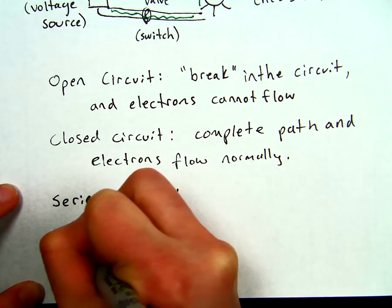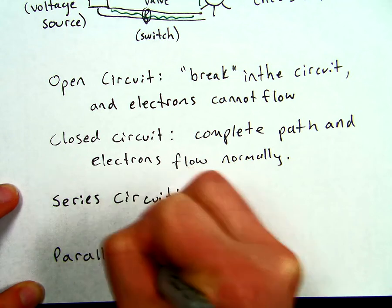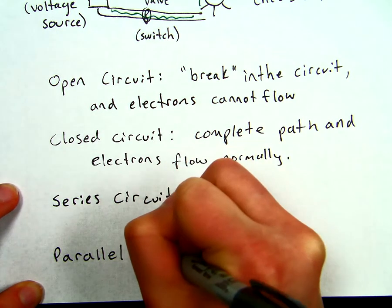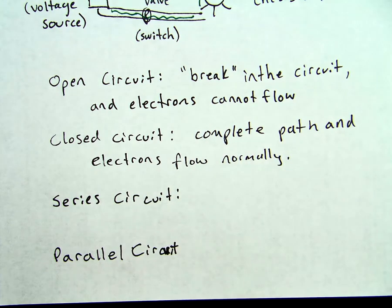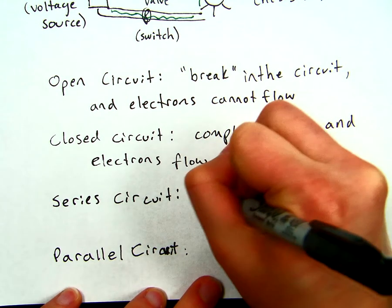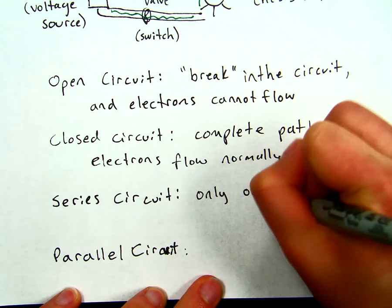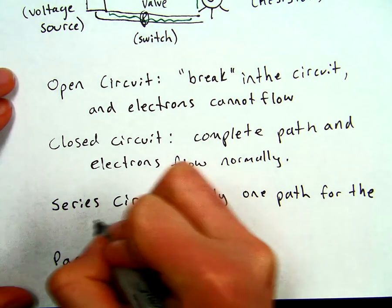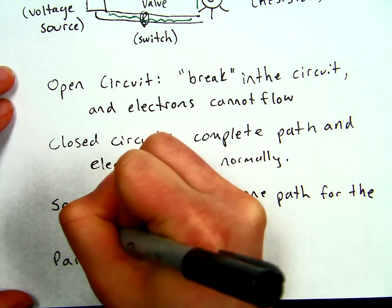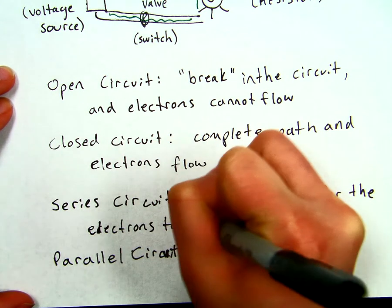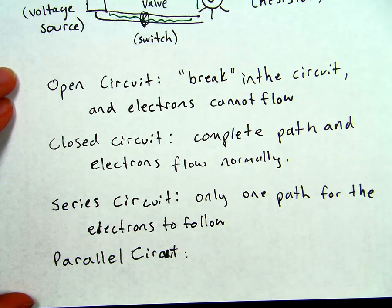So we have a series circuit and a parallel circuit. A series circuit means that there is only one path for the electrons. There's only one path for the electrons to follow.